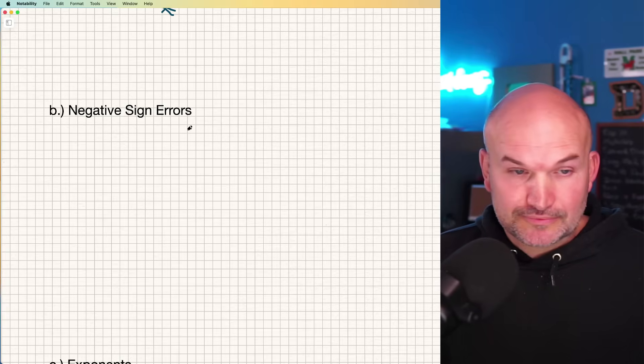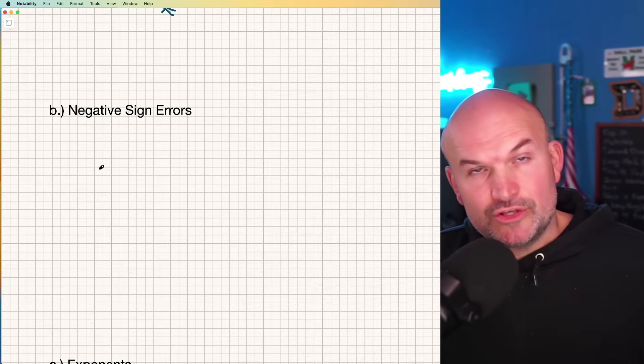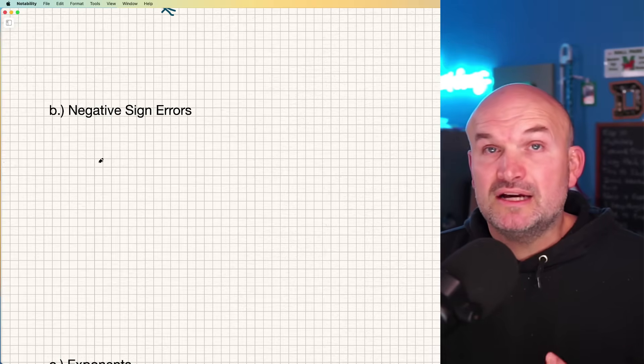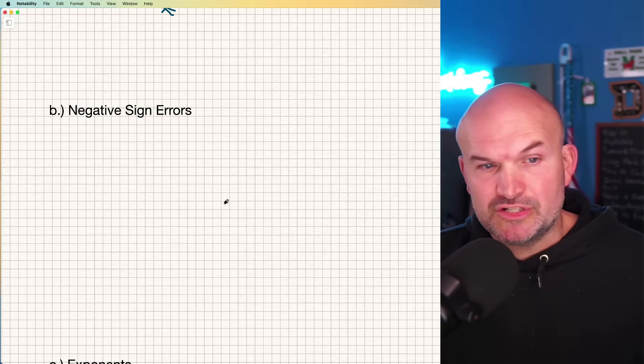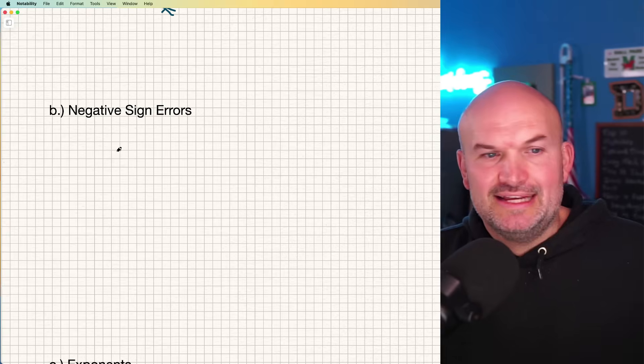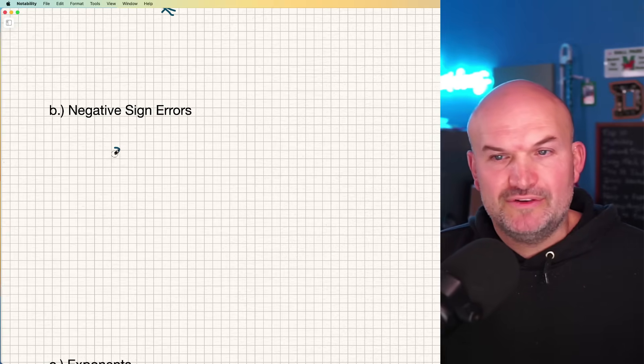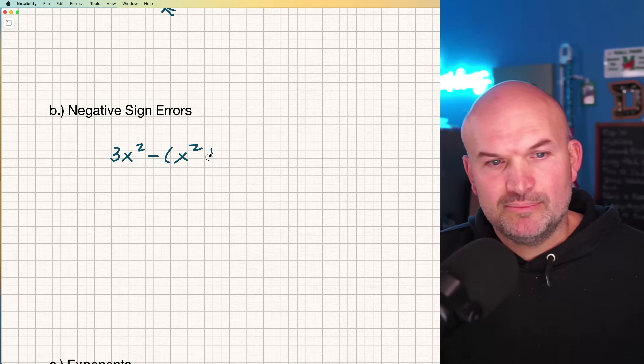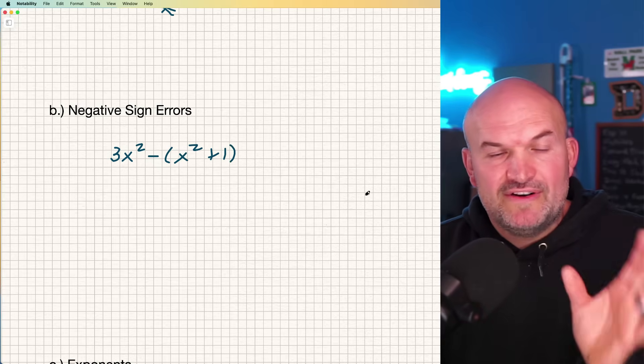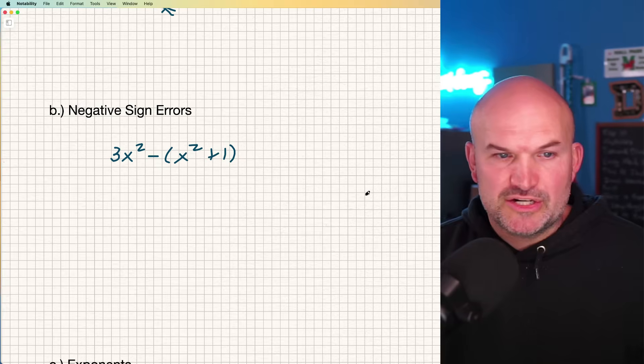The next thing is sign errors. This can happen with polynomials. It also happens a lot when we're adding, subtracting, or solving rational expressions. I'm not going to go into too much detail for all the examples, but I'll give you an example. Like if I had 3x² minus the quantity x² plus one,